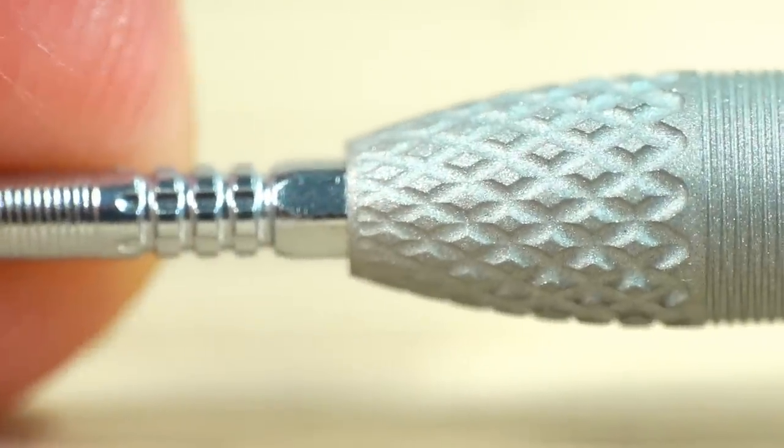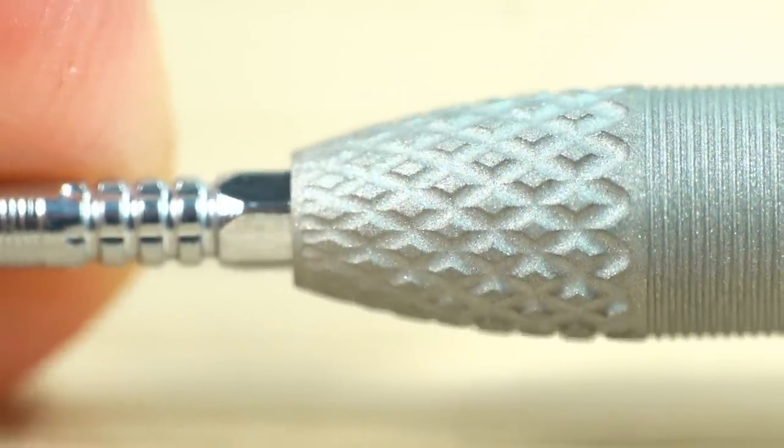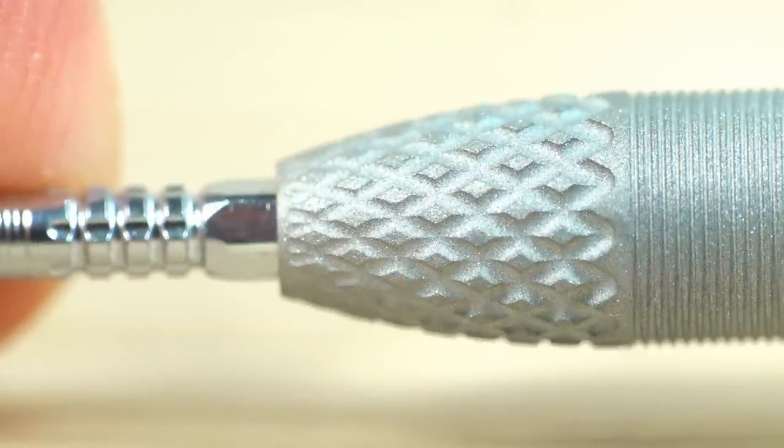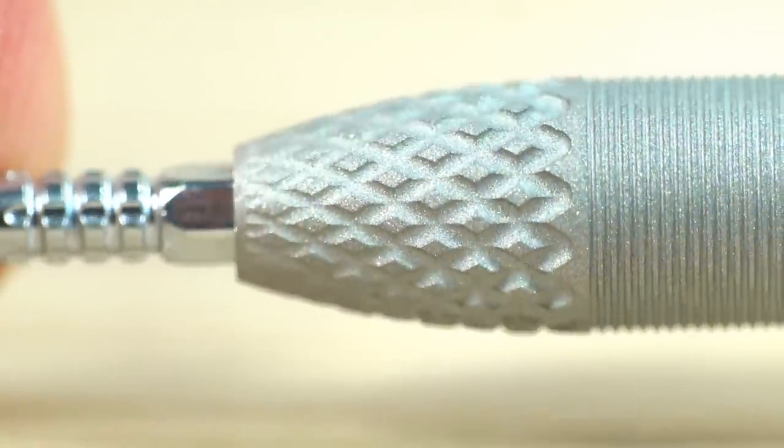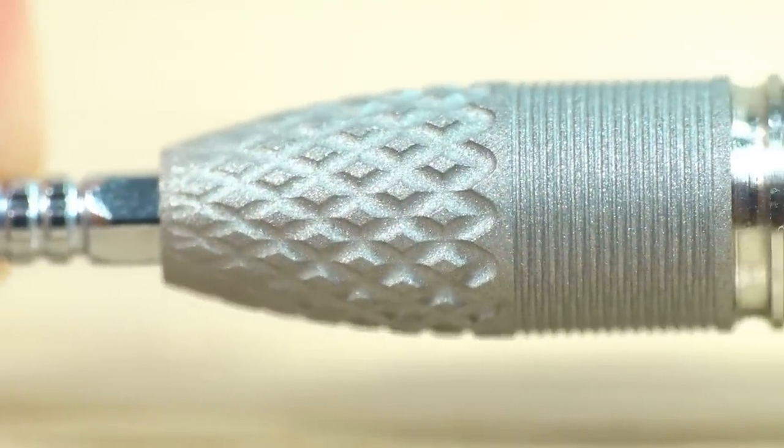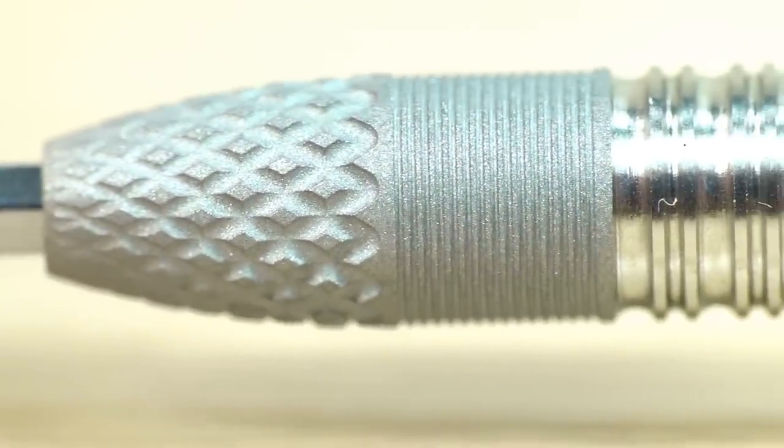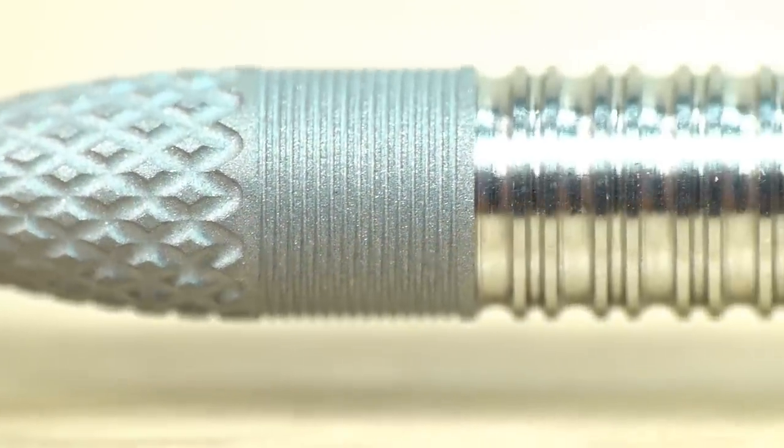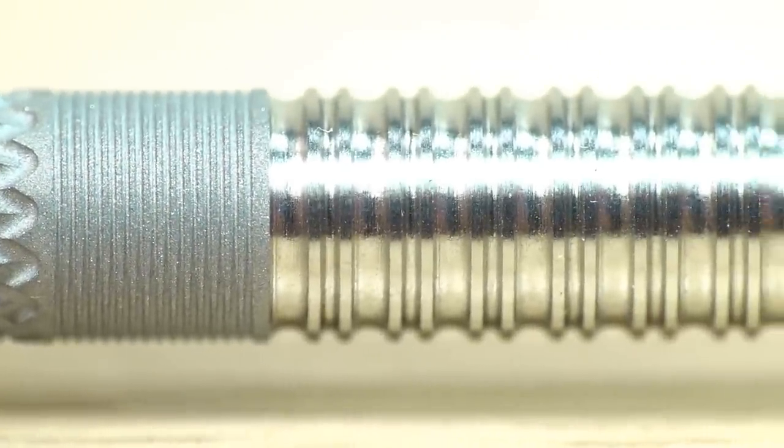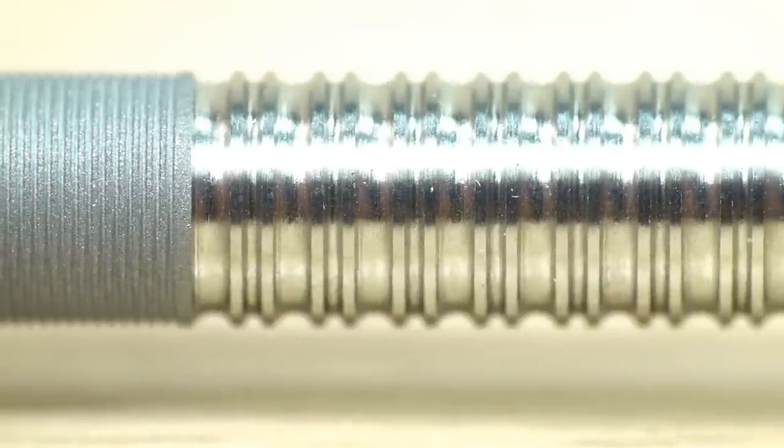So moving on to the barrel, there's the nose. And as you can see, it's got a nail grip with the hand sandblasted finish. So it looks quite neat, that. And then you've got above that a micro ring grip, quite fine. Again, very neatly done.